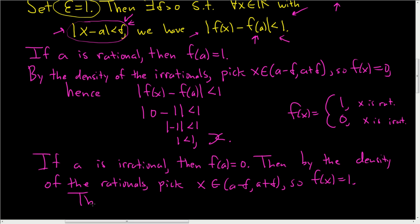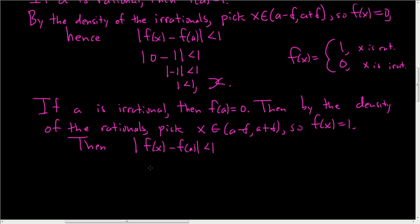And so then, when we look at this difference, f(x) minus f(a), this is less than 1. We know that f(x) is 1 and f(a) is 0. So 1 minus 0, less than 1. So 1 less than 1, a contradiction. So in either case, we have a contradiction. So I hope that made sense.